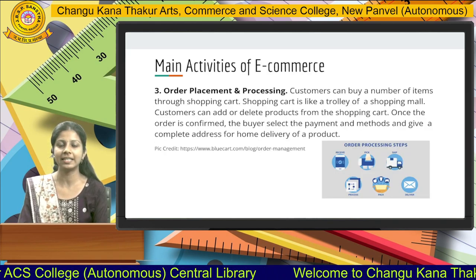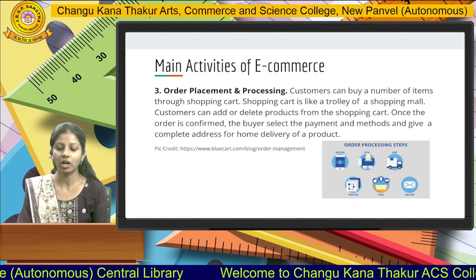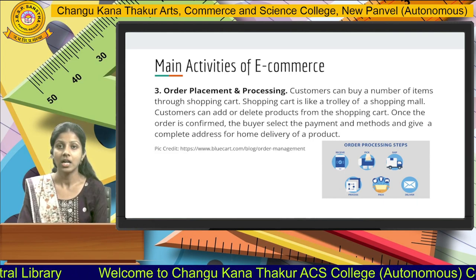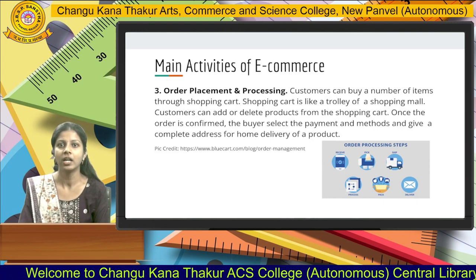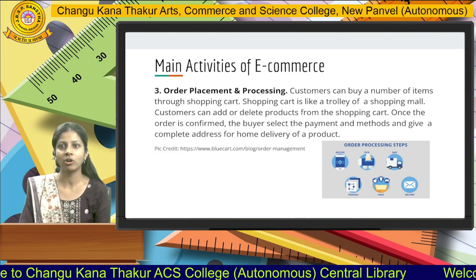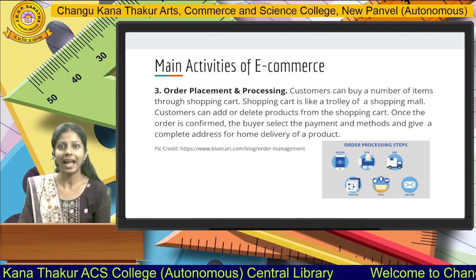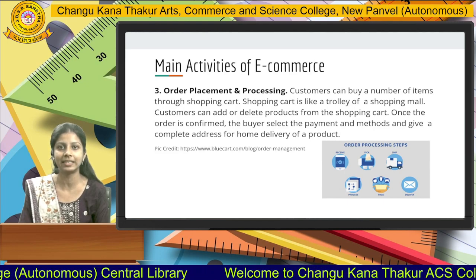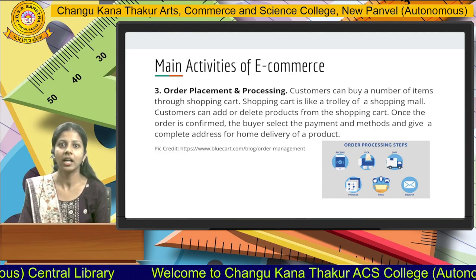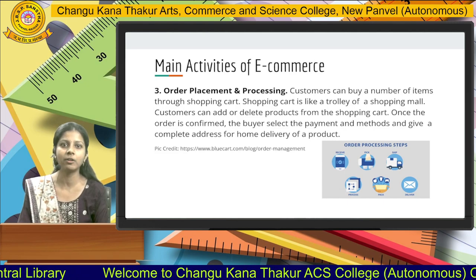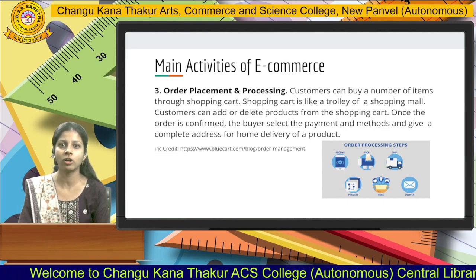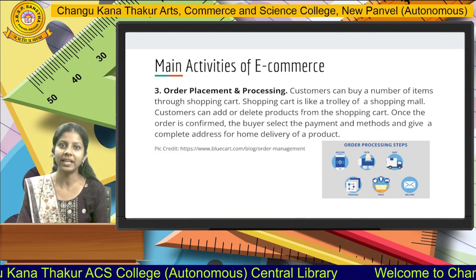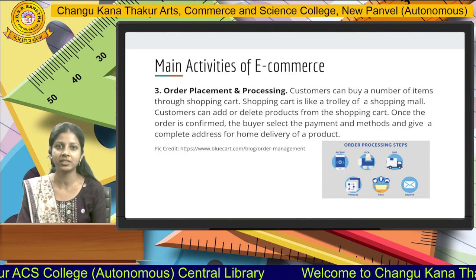Next, the third activity is order placement and processing. Here, your order is placed and the processing of data is carried out through e-commerce. Customers can buy a number of items through a shopping cart, which is like a trolley in a shopping mall. Customers can add or delete products according to their taste, preference, likes and dislikes. To check out their product, customers are required to fill in some vital information for order placement and delivery of goods to their doorstep.